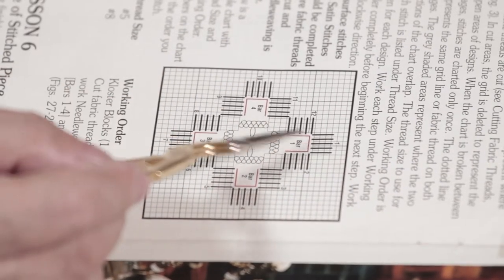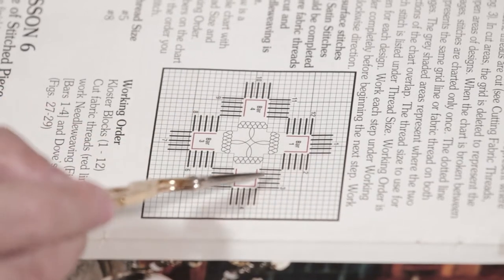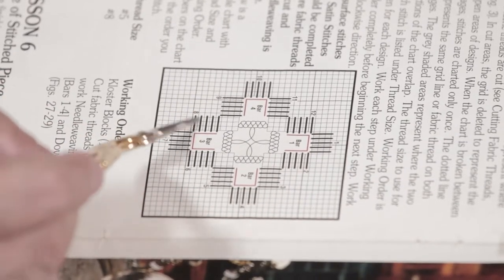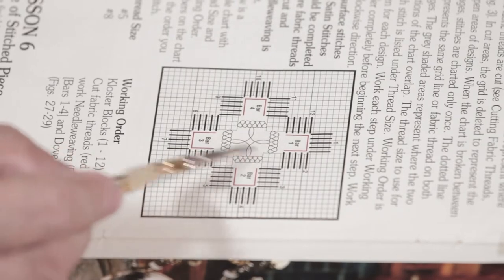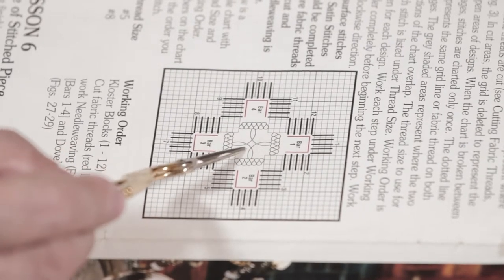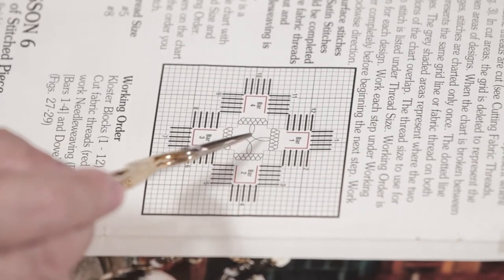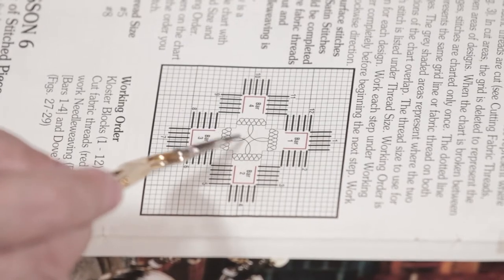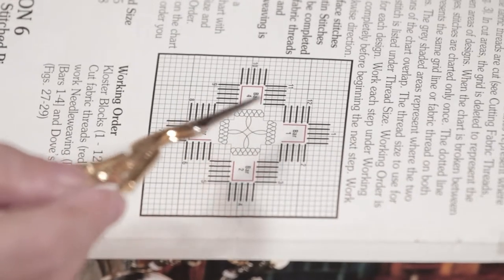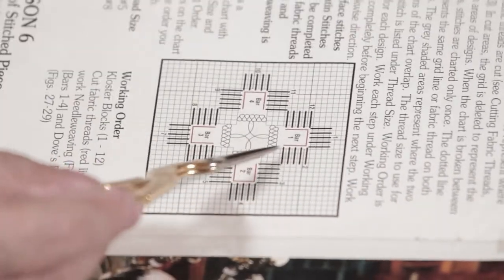So I'll show you how to do this, and then I'll show you how to do this little thing in the center. This is called the dove's eye, this stitch.